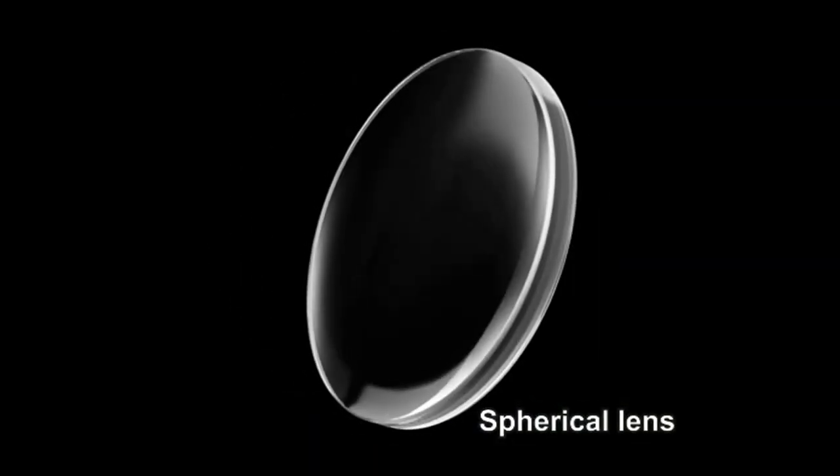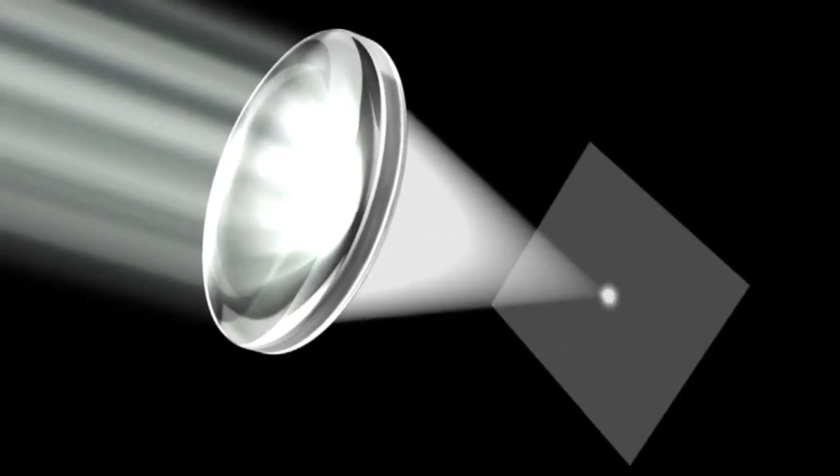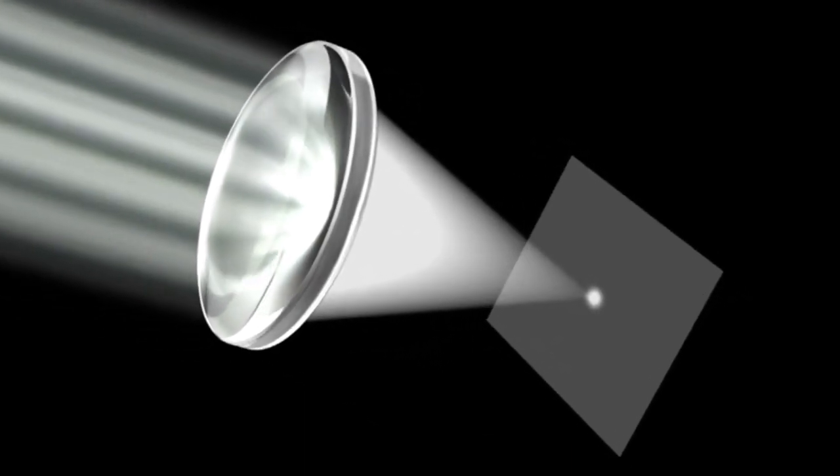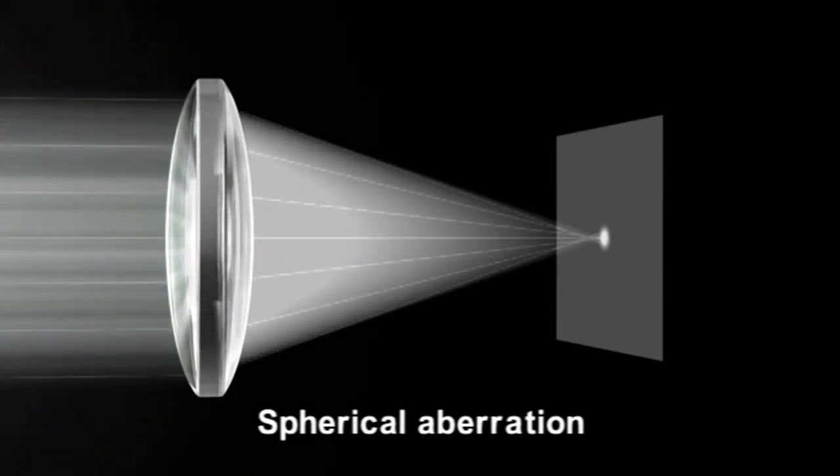With spherical lenses, however, the incoming light doesn't meet at a single point. It is spread out slightly. This is known as spherical aberration.